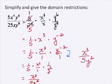Now we are not finished because we need to give the domain restrictions. That means we want to look at the denominator and decide what values of x and y would make this denominator 0. When it's a product like this, it's pretty easy to tell. If x were 0, the denominator would be 0. If y were 0, 25 times x times 0 to the eighth would be 0. So our domain restrictions are that x cannot equal 0 and y cannot equal 0.